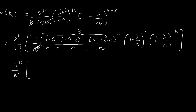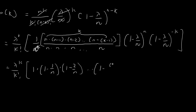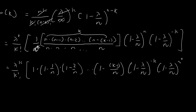In effect, what we have is n divided by n, which is 1; n minus 1 divided by n, which is 1 minus 1 over n; and this goes on all the way to 1 minus k minus 1 divided by n. And here we have 1 minus lambda divided by n to the power of negative k, and 1 minus lambda divided by n to the power of n.